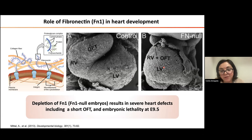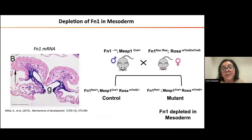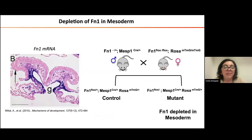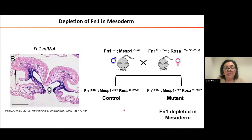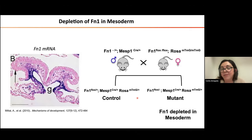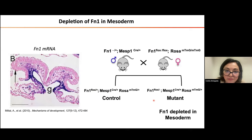Because these samples also have multiple defects, my role was trying to dissect the role of fibronectin specifically in heart development. For that, I used conditional knockouts to deplete fibronectin in the mesoderm, because fibronectin is highly expressed in this tissue. I used the Mesp1-Cre lineage to generate control embryos in which fibronectin is only depleted in one allele, and mutant embryos in which fibronectin was depleted in both alleles and in all mesodermal-derived cells, including the second heart field.